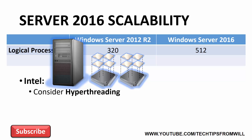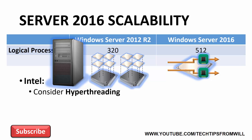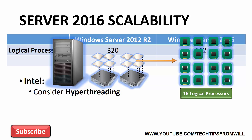Nowadays, Hyper-Threading is found in the vast majority of modern Intel processors. According to Intel, when Hyper-Threading is enabled, each processor core in the system can supposedly process two threads of data simultaneously. In a nutshell, this means that each core in the system is recognized as having two logical processors. In the case of our eight-core system, when Hyper-Threading is enabled and when Hyper-V is installed, we essentially have 16 logical processors to allocate to virtual machines.